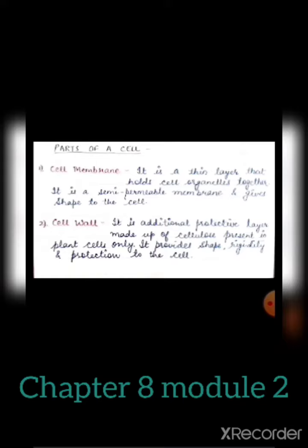Cell membrane is present in both plant and animal cells. It is a thin layer that holds the cytoplasm — the jelly-like material in the cell — and the cell organelles together. Semi-permeable means it is selectively permeable: it gives permission to selective substances or molecules to enter and exit the cell.